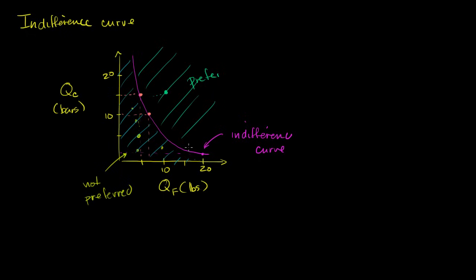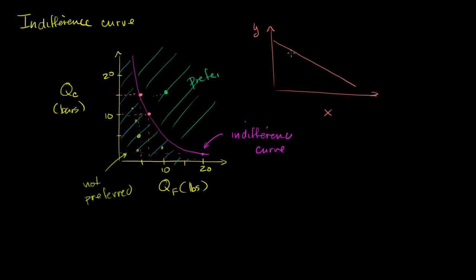Now the last thing I want to think about in this video is what the slope of this indifference curve tells us. This is really an idea out of calculus, because we're used to thinking about slopes of lines. For a line, the slope is how much the vertical axis changes for every change in the horizontal axis — that is delta y over delta x. But on a curve like this, the slope is constantly changing. To find the slope exactly at a point, you find the slope of the tangent line at that point.